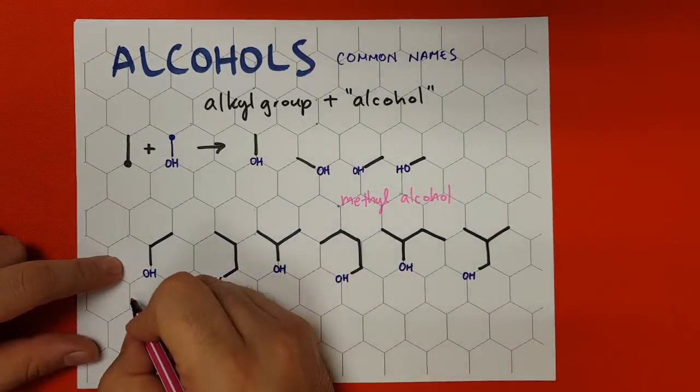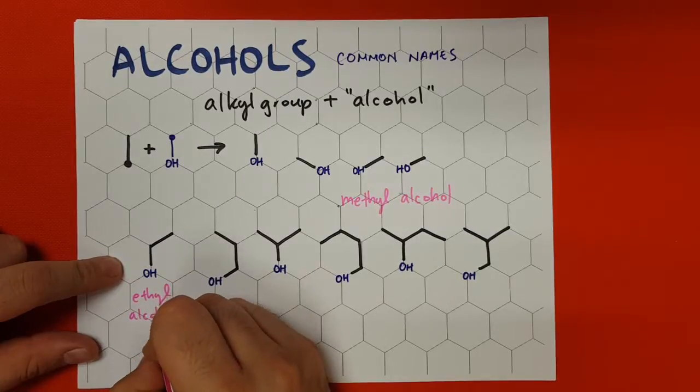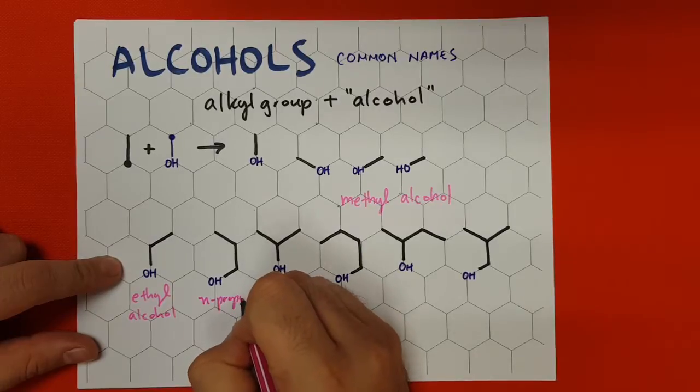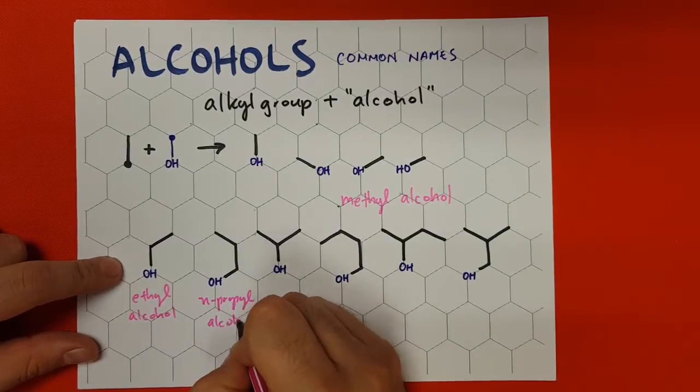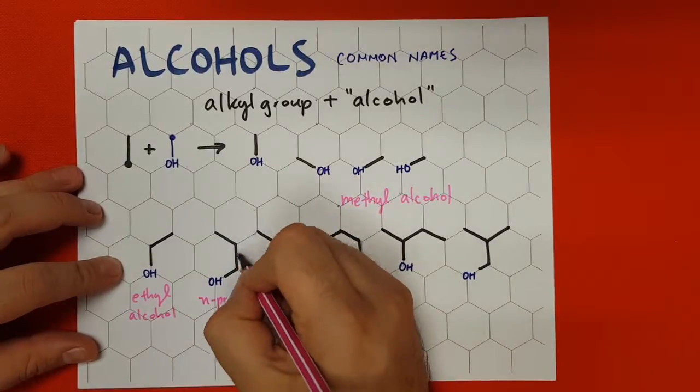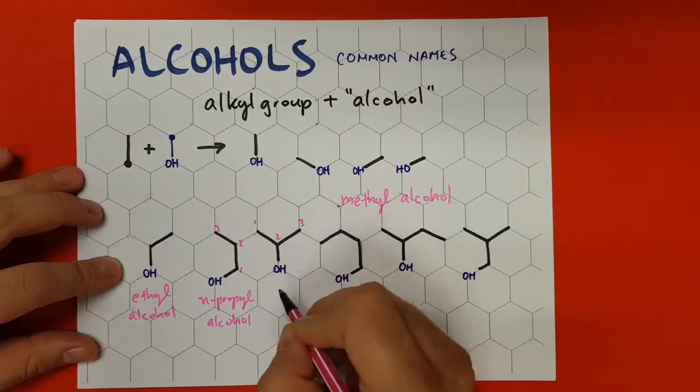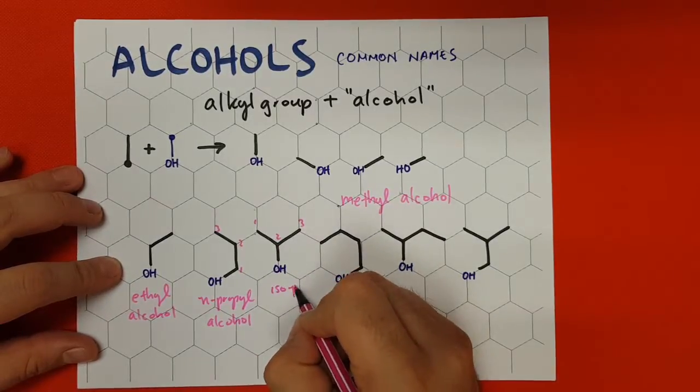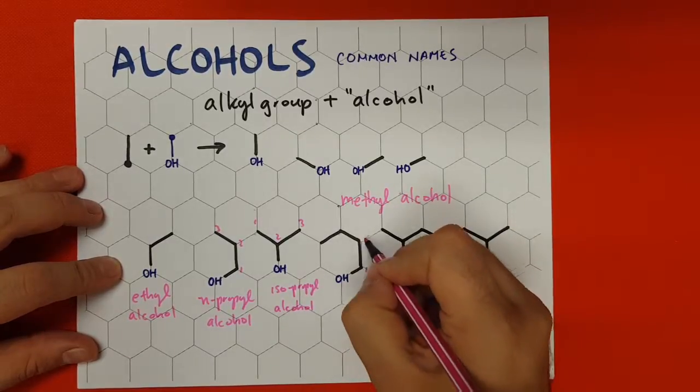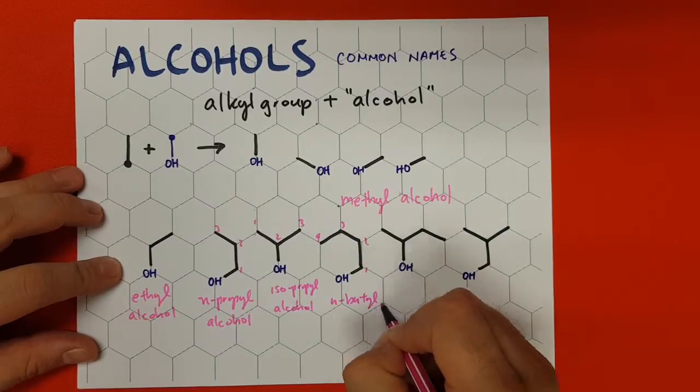So in this case we have ethyl attached to OH, ethyl alcohol. Next we have one, two, three in a straight line, propyl alcohol. Then this one in an antenna shape or attached to the middle, so this is going to be isopropyl alcohol. This one over here, one, two, three, four in a straight line, butyl alcohol.